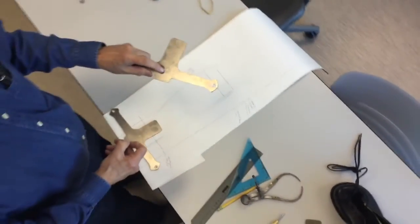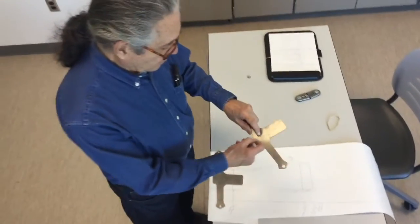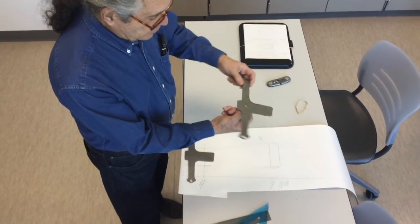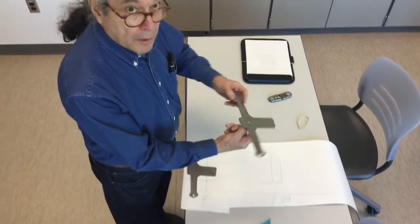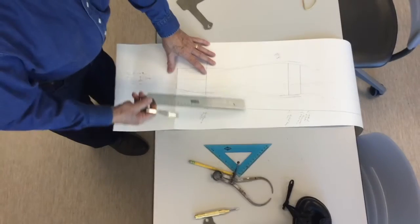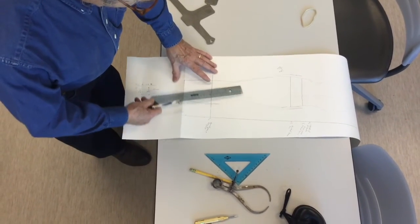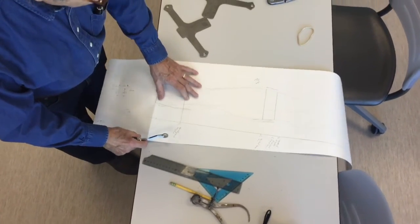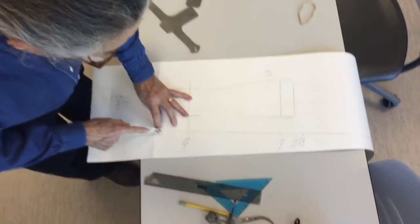So now we have the hole drilled. And we'll put a wood screw in there. And this will allow us to move the stirrup around the pivot point.